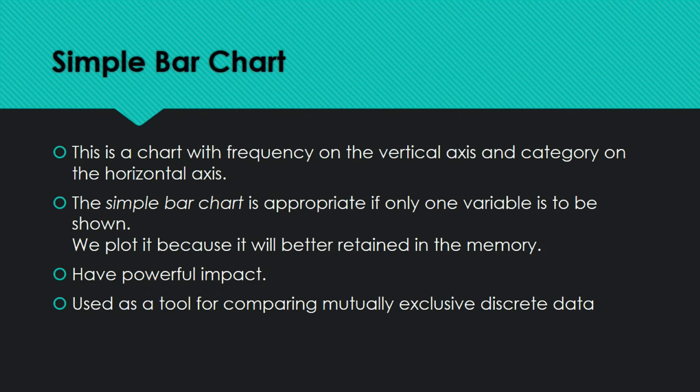The simple bar chart has frequency on the vertical axis and category on the horizontal axis. The simple bar chart is appropriate when only one variable is to be shown — for example, year-wise classes from first to fourth year, with no comparison involved. We plot it because visually plotted information is better retained in memory and has a powerful impact. It is used as a tool for comparing mutually exclusive discrete data.